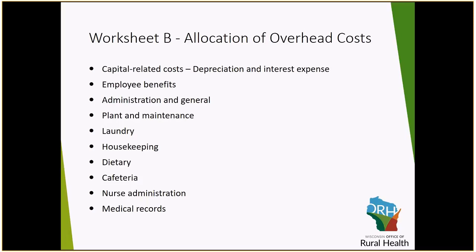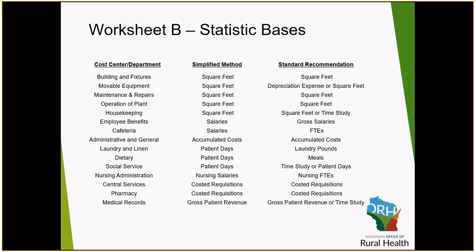Another example would be housekeeping. Do the housekeeping staff clean the gift shop or the ambulance garage? Is the nursery receiving an allocation of dietary costs? These are all examples to consider when reviewing and preparing your B-1, to identify cost centers that are receiving an allocation of costs for services they do not receive. There are two methods that a critical access hospital may choose to allocate costs.